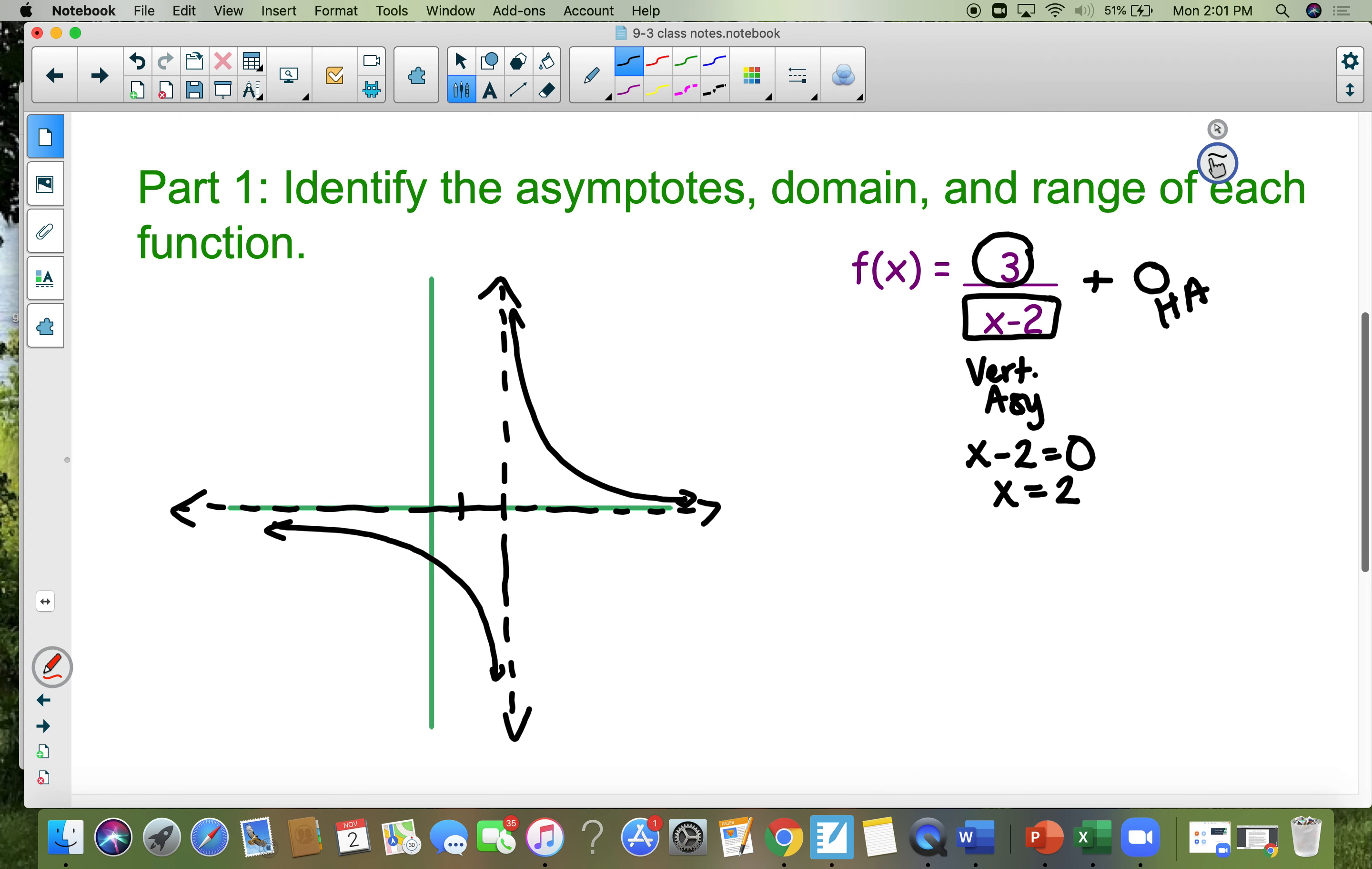The domain are all your x values of the graph. So the domain is negative infinity to positive infinity except at x equals 2. Do you see that? You can't go through x equals 2. And the range is also negative infinity to positive infinity except at y equals 0.